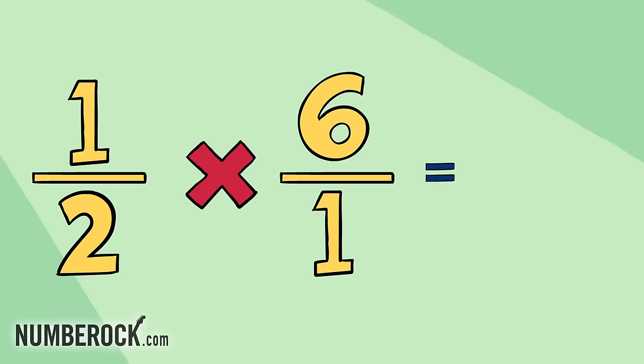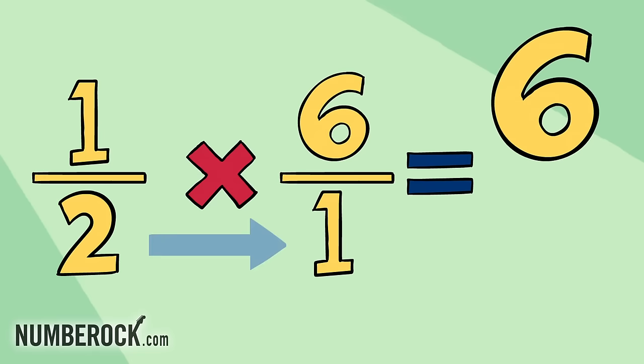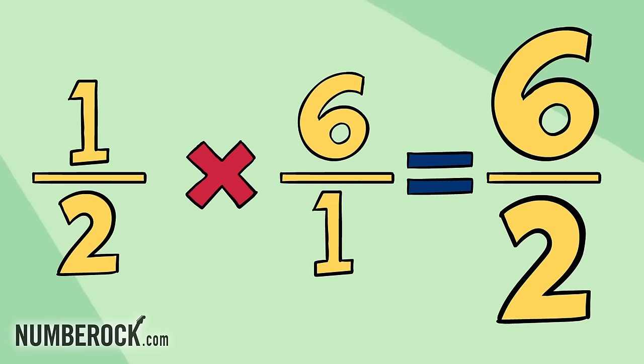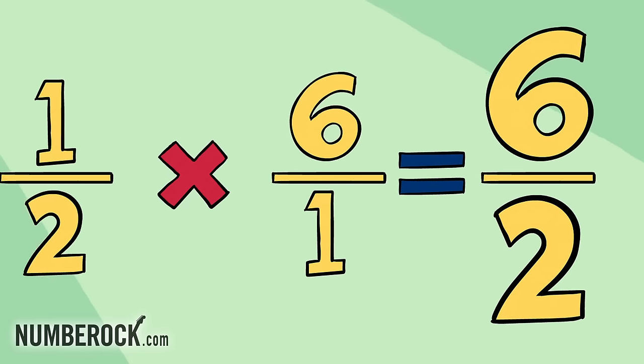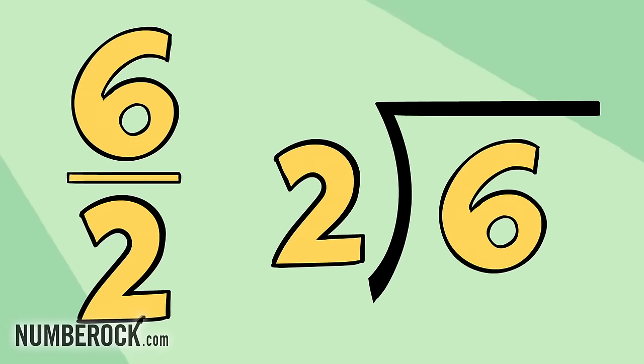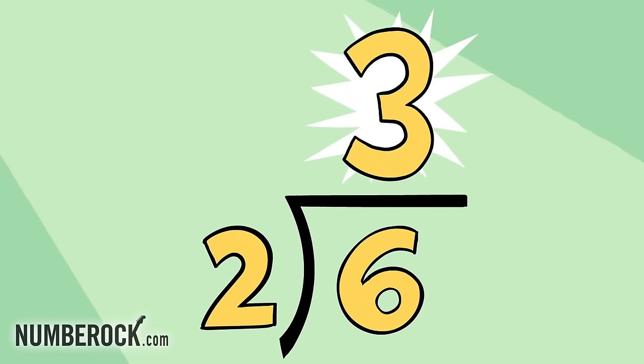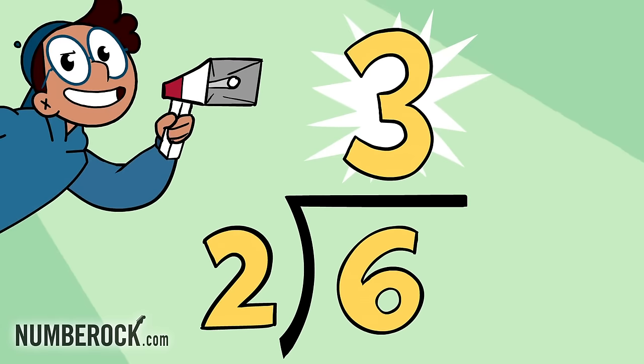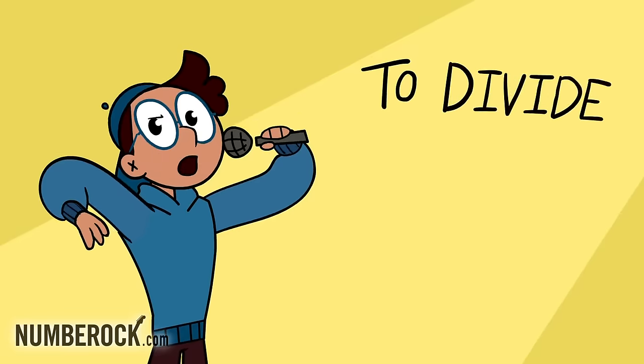One times six is six and two times one is two. It's an improper fraction, so we're not through. Divide six by two and the quotient is three — keep, change, flip. It's all that you need.